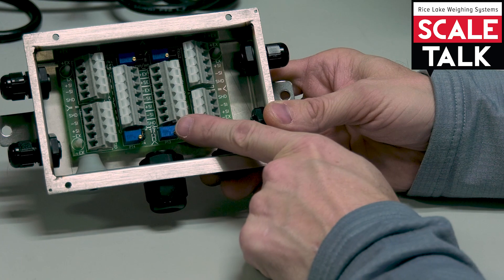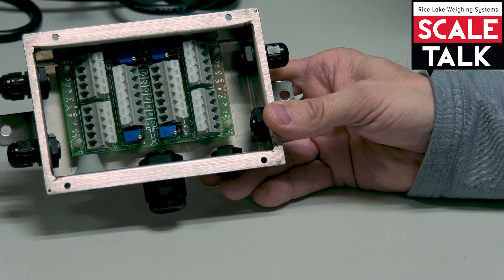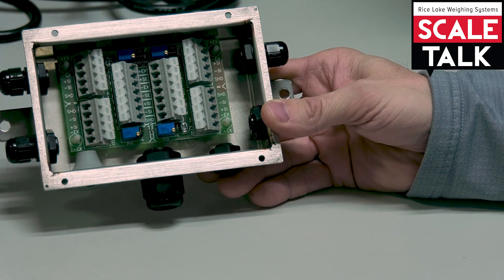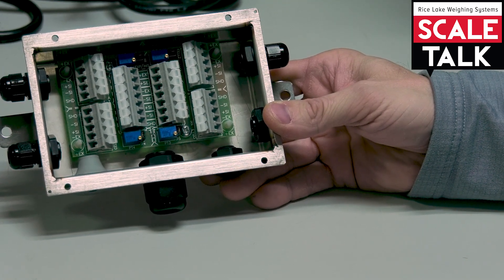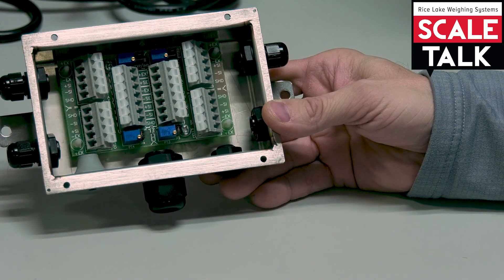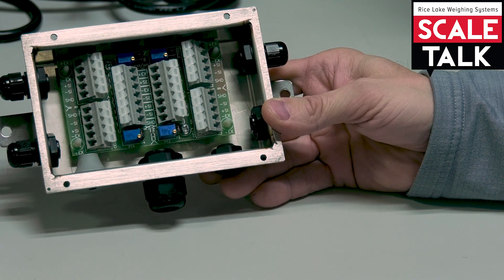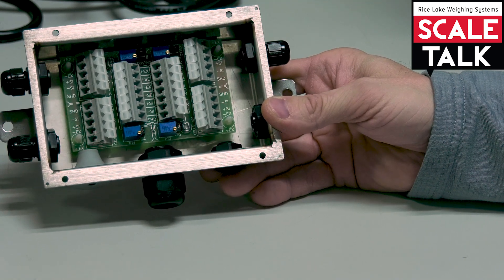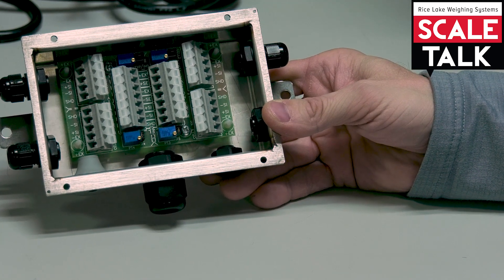The other connection block here is for an expansion. So I could daisy-chain a couple of these four-channel J-Boxes together for an eight-channel scale. For example, a truck scale might have eight load cells in it, so I could daisy-chain a couple of four-channel J-Boxes together to bring all of those load cells to function as a single system.